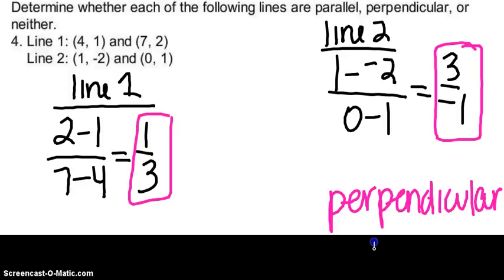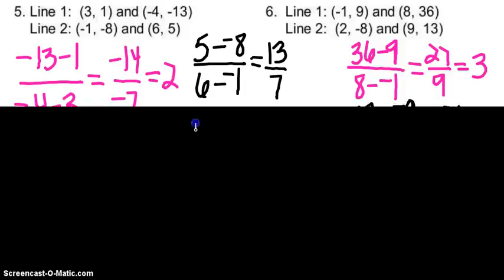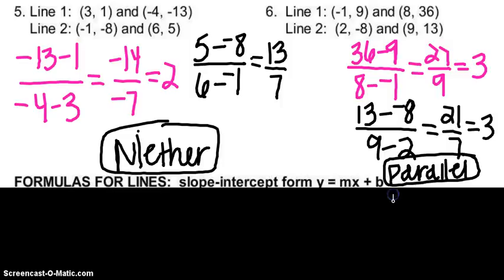Let's look at questions 5 and 6. For question 5, I have negative 13 minus 1 divided by negative 4 minus 3; my slope for line one is 2, and for line two it's 13 sevenths. Neither one matches and it's not the opposite reciprocal, so my answer is neither. For number 6, using the slope formula, both lines have a slope of 3 — since the slopes are the same, the answer is parallel.